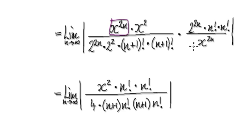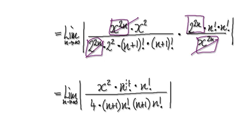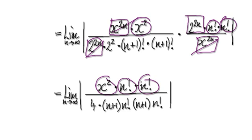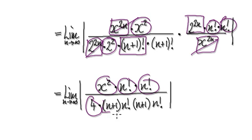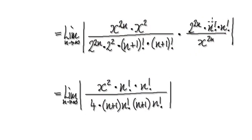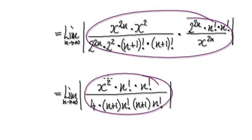This will cancel out with this, and this will cancel out with this. That leaves you with x squared, and n factorial blocks. You've got a 4 here. Visualize this as being (n+1) times n factorial, and visualize this block here as being (n+1) times n factorial. So this whole thing here will then become this.